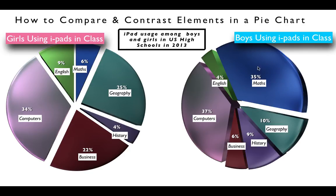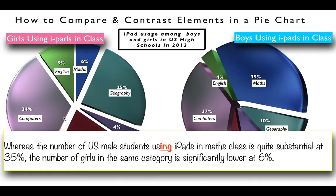The kind of sentence we want to focus on is this: 'Whereas the number of US male students using iPads in Maths class is quite substantial at 35%, the number of girls in the same category is significantly lower at 6%.' This sentence is quite long — it nets 30 words. That's 20% of the IELTS report done in one sentence.